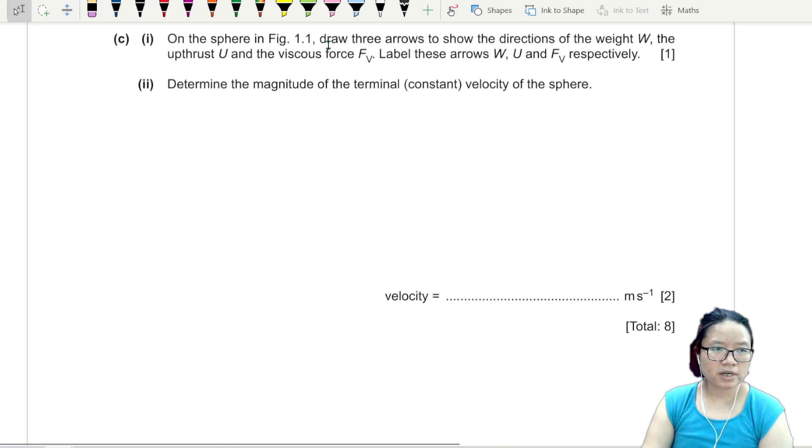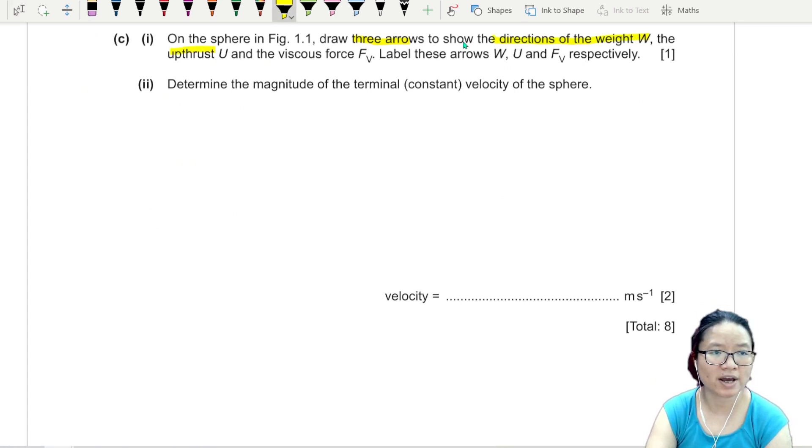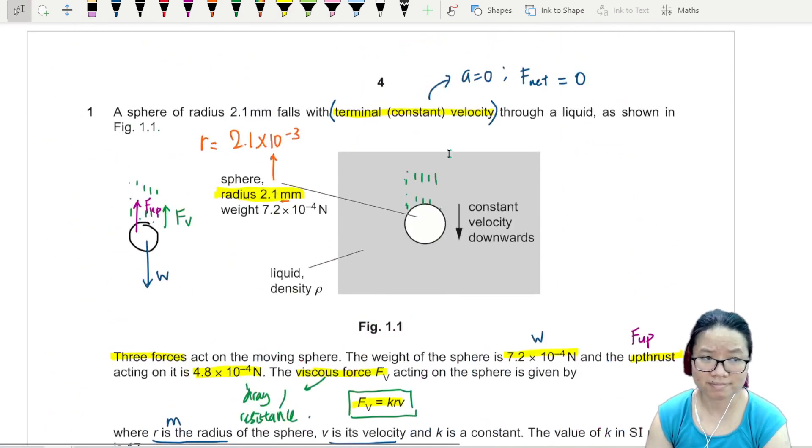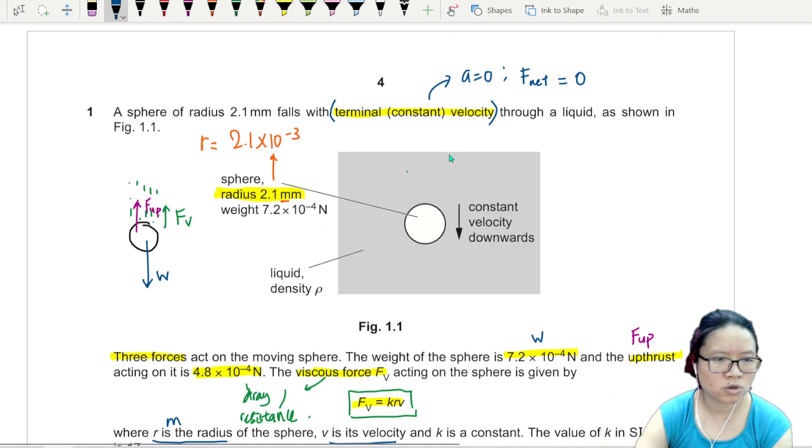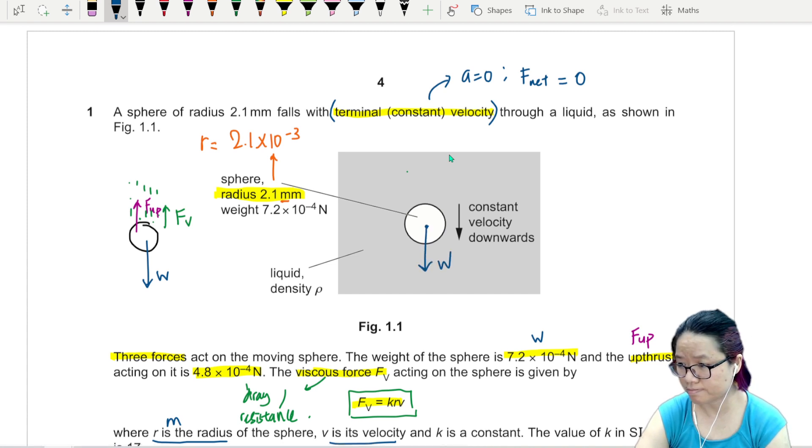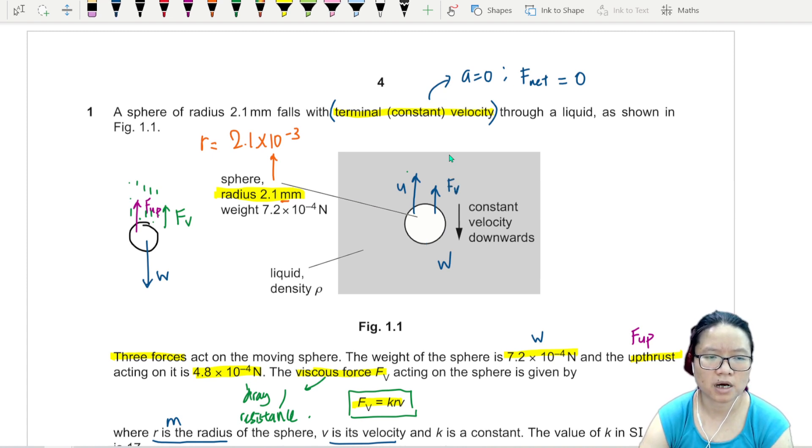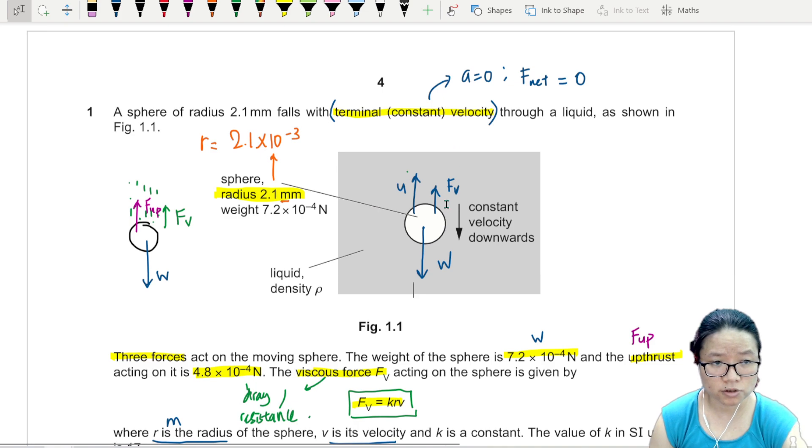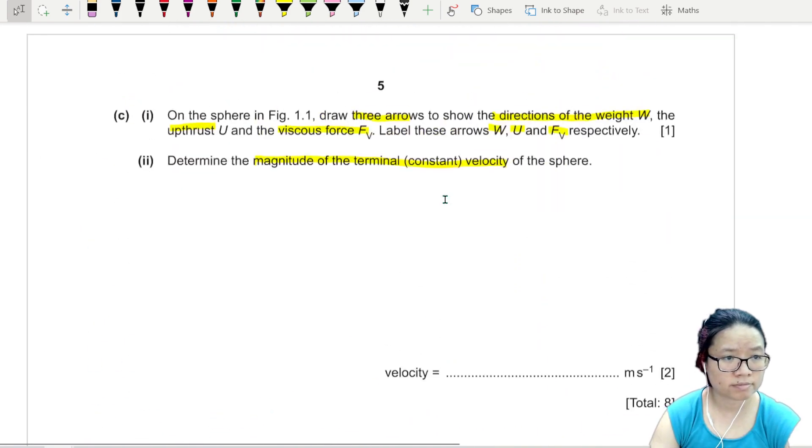Part C: On the sphere of figure 1.1, draw three arrows to show the direction of the weight W, upthrust U, and viscous FV. Label W, U, and FV. I'm going to go back there and draw on the diagram. We just need an arrow pointing downwards W, then we have upthrust U, and we have viscous force FV. The length of the arrow doesn't matter - the main purpose is to indicate direction. But if you want to be accurate, the upward force and the downward force have to be balanced.